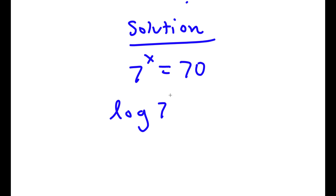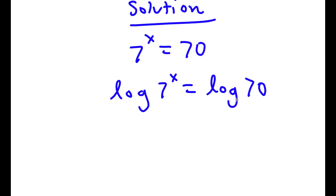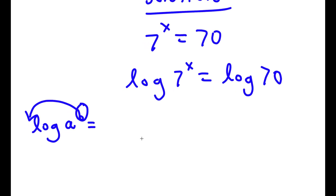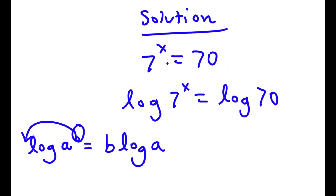So now I have log of 7 to the power of x is equal to log 70. Now an important property of logarithms is that if I have something in the form log(a) to the power of b, I can actually move this exponent b to the front of the logarithm. So this equals b times log(a). This property is really important because it changes an exponent into an actual term. Right now x is an exponent and it's really hard to solve for x because x is going to be a decimal.